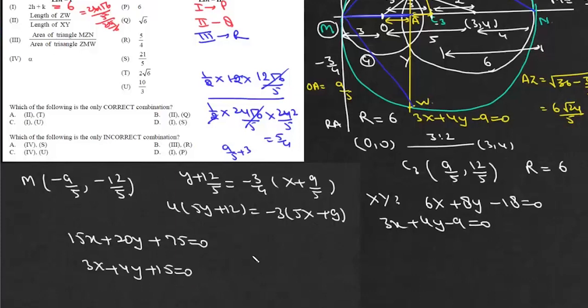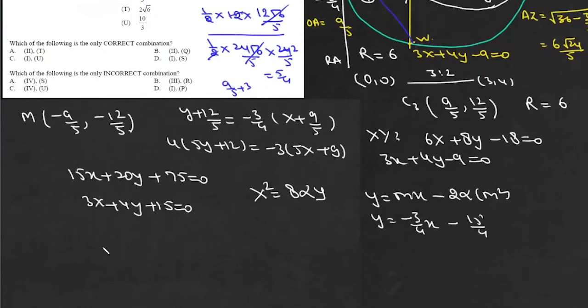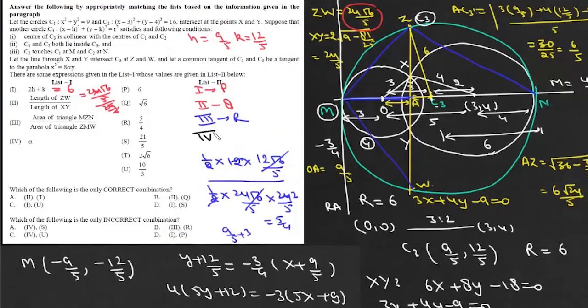Now this line it is tangent to this parabola x squared equals 8 alpha y. Now for this parabola equation of tangent is given by y equals mx minus am square. And a in this case is 2 alpha. So it will be 2 alpha m square. So if we express this equation then it will be y equals minus 3 by 4x minus 15 by 4. So if we equate the two equations we will get minus 2 alpha and m squared is 9 by 16 and a will be equal to minus 15 by 4. Now this minus minus will cancel. So we will get 3 alpha is 10 or value of alpha is 10 by 3. So basically this fourth will match with U.